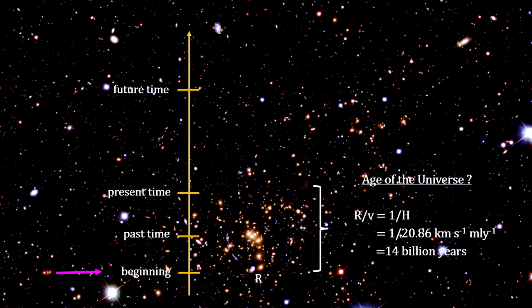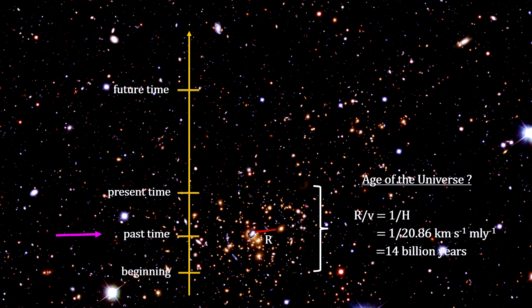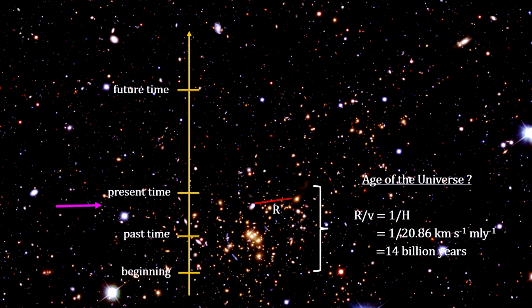Assuming for now that the velocity is constant, we can divide it into the current distance between the two galaxies to see how long it took them to get this far apart. That's just 1 over the Hubble constant. So, without actually knowing the distance between them, or their separation velocity, we find the two galaxies would have taken 14 billion years to reach their current separation.